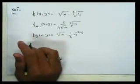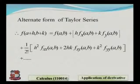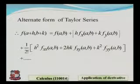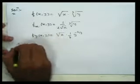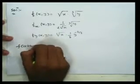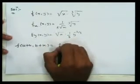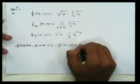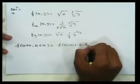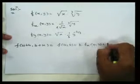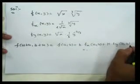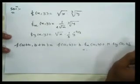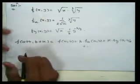We use the alternating form of the Taylor series: f(a+h, b+k) = f(a,b) + h·fx(a,b) + k·fy(a,b) + and so on. But we have to apply only up to the first order term, so we stop here.